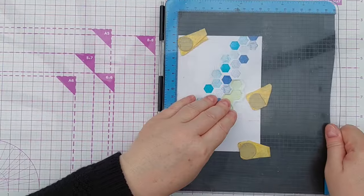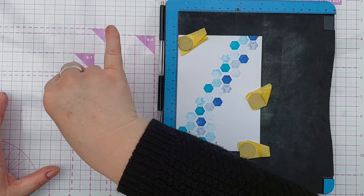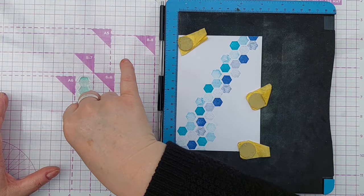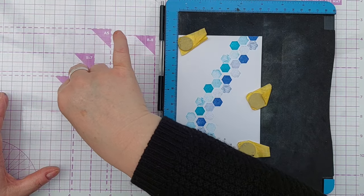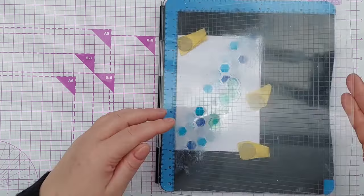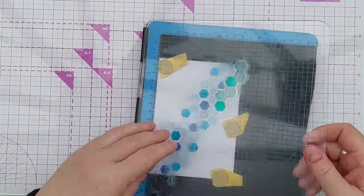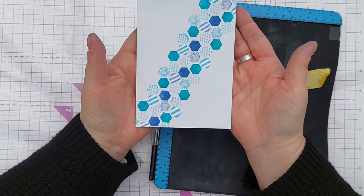If you haven't got a strip of hexagons you can still, if you've got the patience, build up a pattern like this using single stamps that will just take a little bit longer. And there we have our pattern.